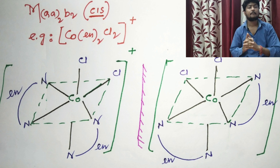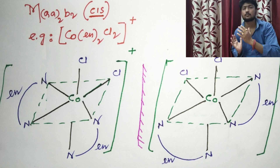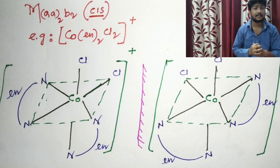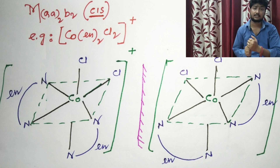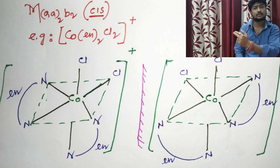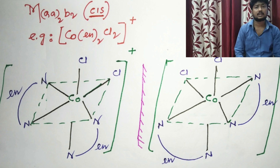If we take a mirror image of the cis isomer of the previously explained compound, we will get an isomer which is the mirror image of the cis form, and these two isomers will not be superimposable on each other. For example, MAA2B2 — taking [Co(en)2Cl2]+ and its cis isomer — if a mirror is kept in the middle, we get a mirror image structure. These two structures are not superimposable to each other, so for a cis isomer, an optical isomer also exists.